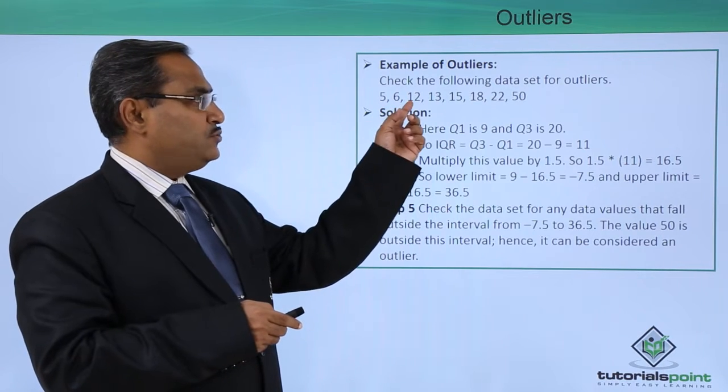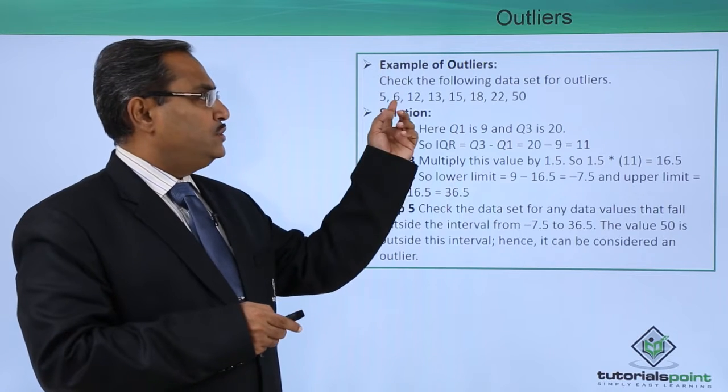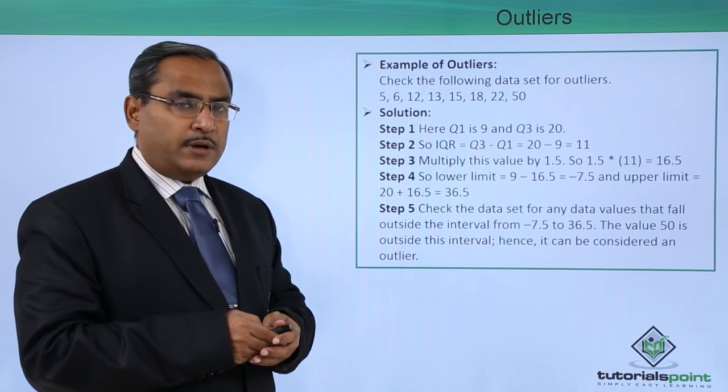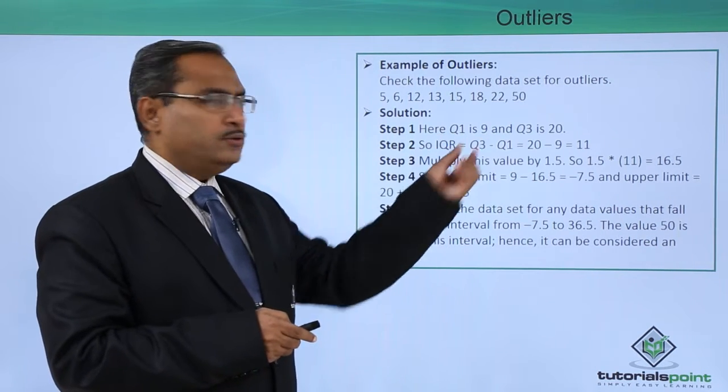6 plus 12 divided by 2, that is the average of 6 and 12. 6 plus 12 is 18, divided by 2 is 9. So Q1 equals 9 here.